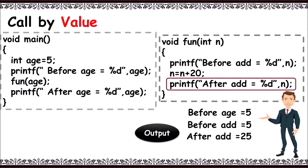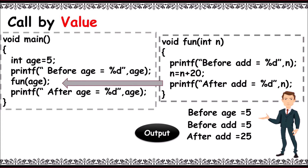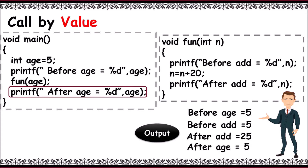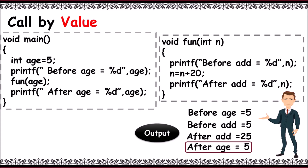It prints 'after add = 25'. As the function completes, it returns back and prints 'after age = 5'. In the output, you can observe the value of age doesn't get modified, as we called it by value.